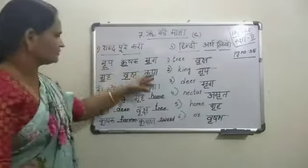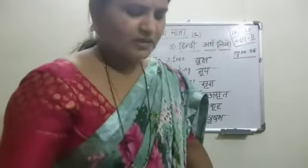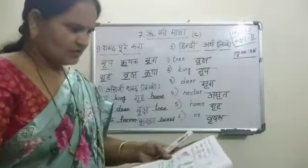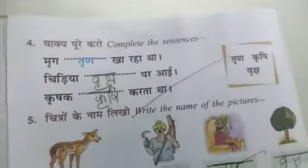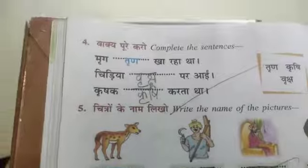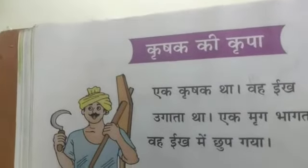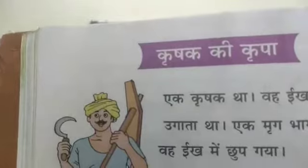Okay. First, second, third Romans are complete. Now the fourth Romans: Vaakki Poore Karo. You are given a poem, Nana. If you want to complete this fourth Romans exercise, you have to learn the poem. I will explain the poem. What is your poem name? Krushakki Krupa. I will write it on the board.